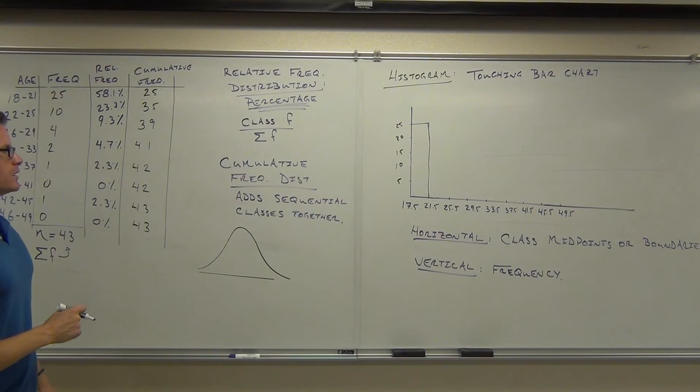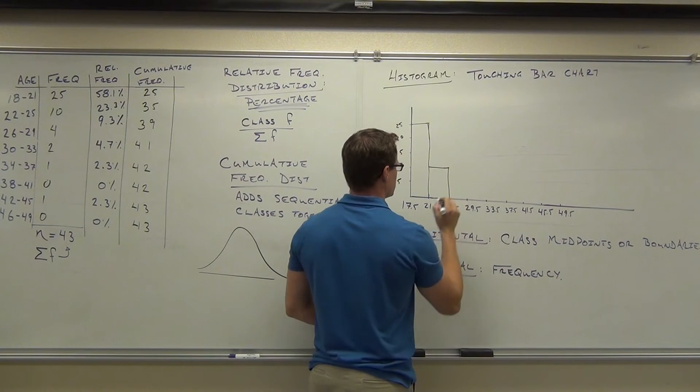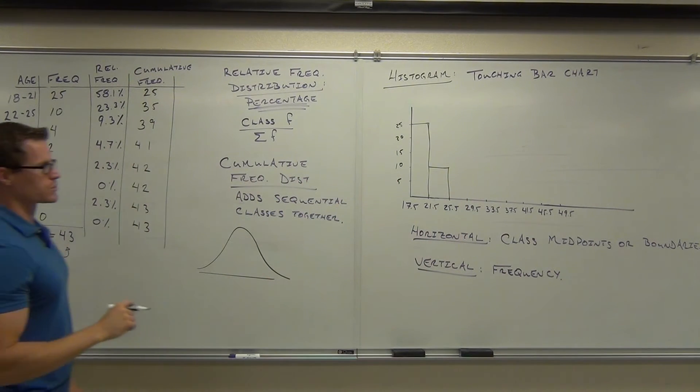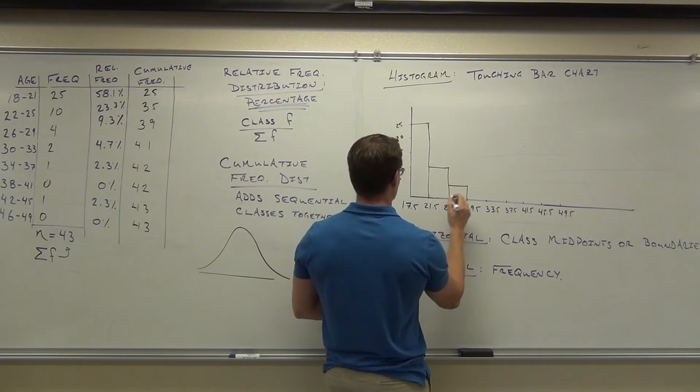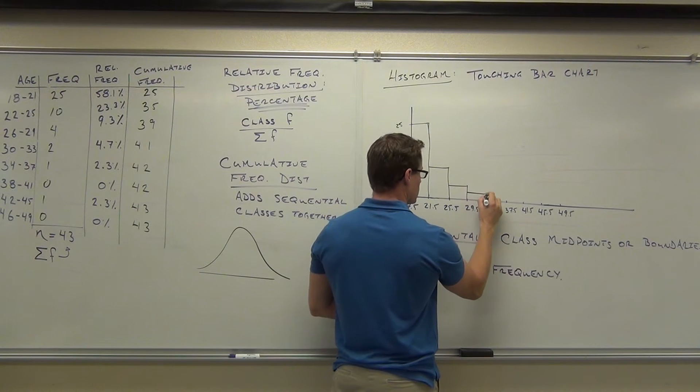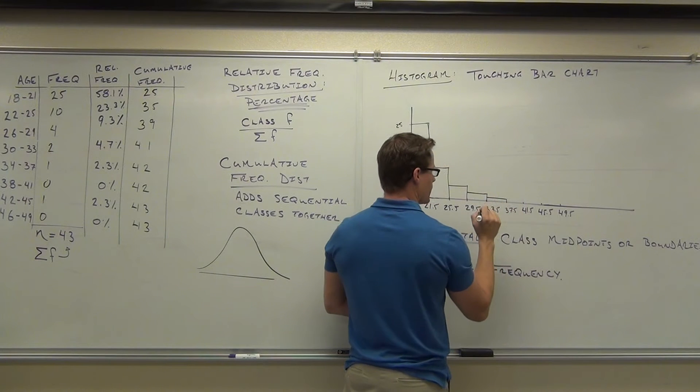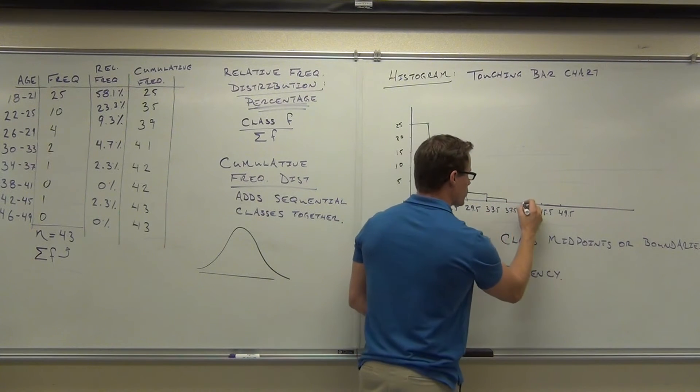And we just keep on going. How much should our next class be? 10. So drop all the way down here to 10. Looks like the next class was 4, so we're going to drop down to 4. Then we have 2. We have 1. We have 0, so we're not going to put anything there. There's no bar there. We're going to go back up to 1.